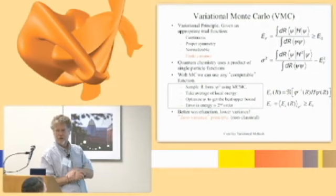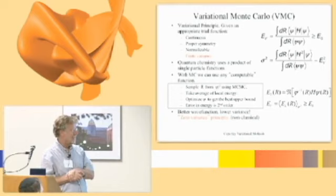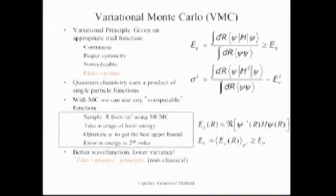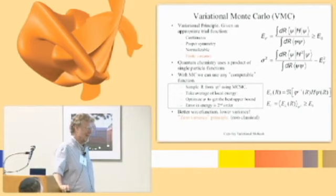You can see that right from here. The error bars are going to be the fluctuations in the local energy — the statistical fluctuations are caused by the fluctuations in your estimator. But if psi is an exact wave function, H psi over psi is a constant — there will be no fluctuations. So not only will you get the exact energy, but you'll get it without any fluctuations. You can do just one step of Monte Carlo and get the exact answer. That's the zero variance principle.